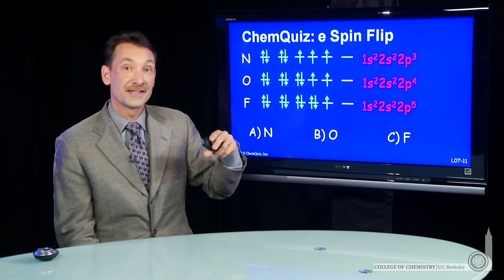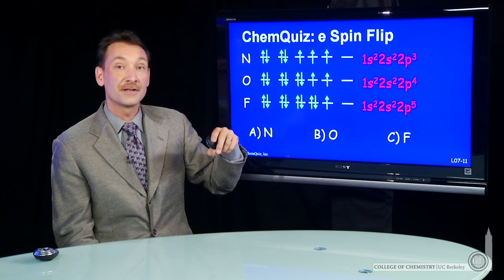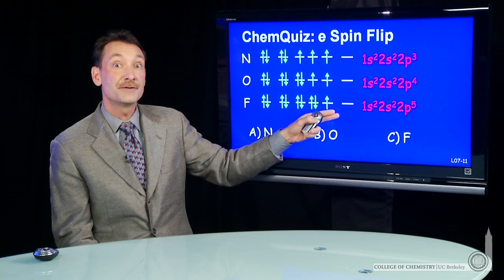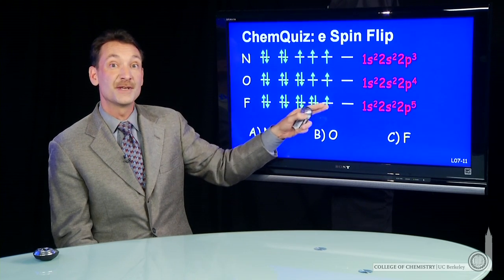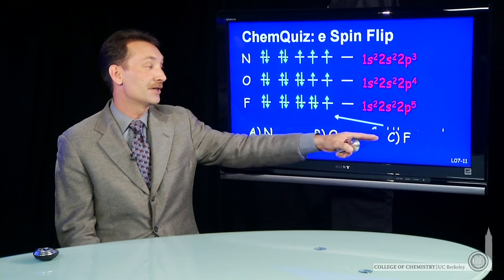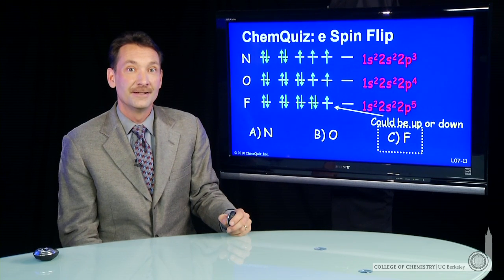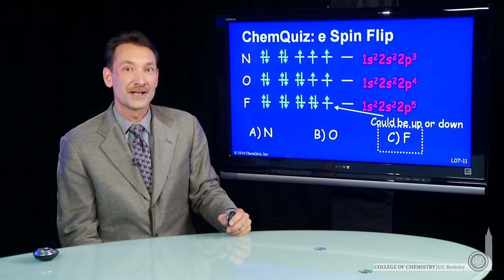But fluorine, that's not the case. Everybody's paired up except for this unpaired electron. So fluorine can either have spin up or spin down. The correct answer here, fluorine, fluorine is independent to an electronic spin flip.